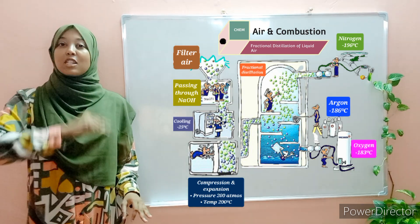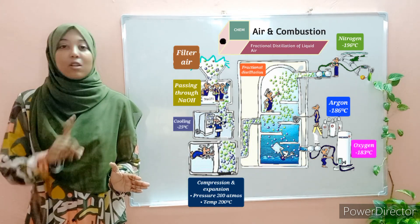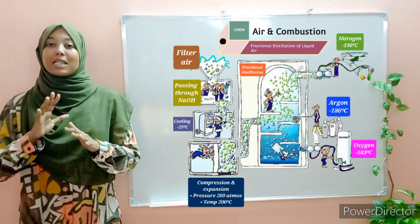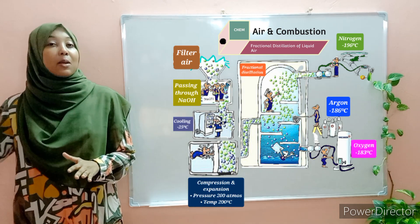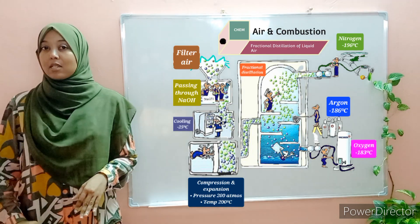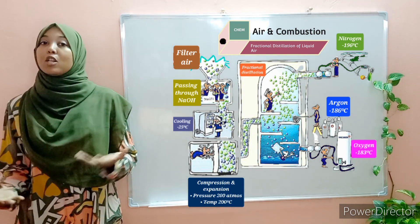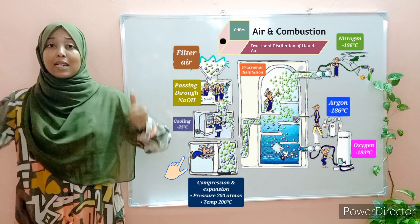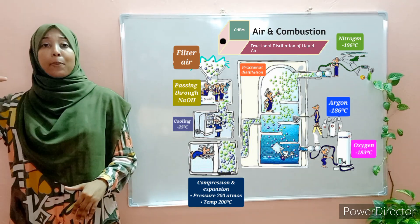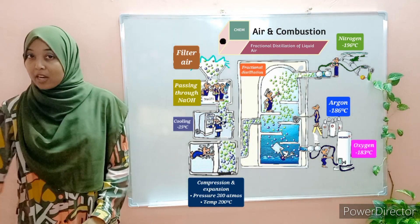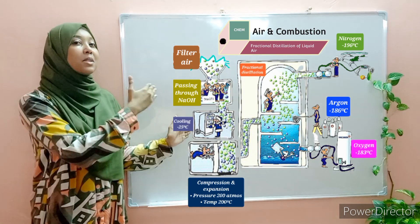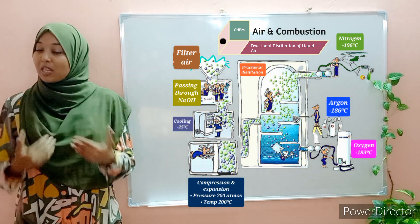Can we proceed to fractional distillation now? Not so fast. Fractional distillation is a process whereby you have separation of a mixture based on boiling point. That means our air needs to be in liquid state. How do we convert gaseous air to liquid air? Simple — by repeatedly compressing and expanding it. Repeated compression and expansion at very high pressures of around 200 atmospheres and at very low temperatures of negative 200 degrees Celsius causes the air to liquefy.